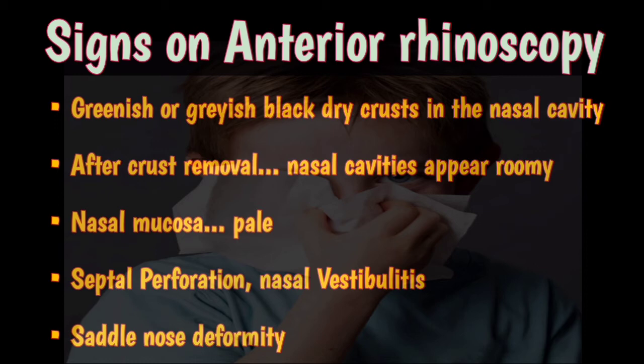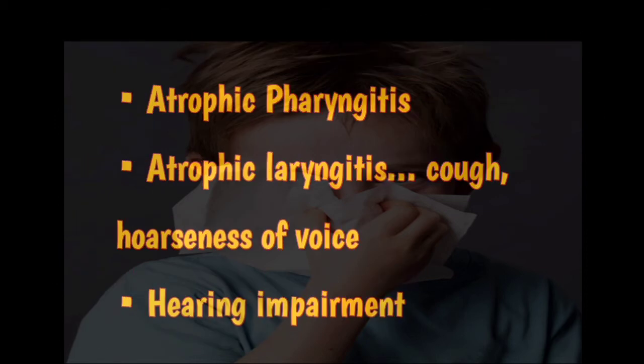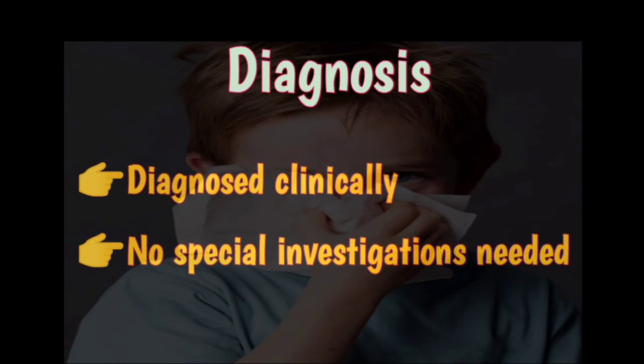After the crusts are removed, nasal cavities appear roomier and the crusts cause bleeding. Nasal mucosa appears pale, and septal perforation and nasal vestibulitis may be seen. The nose may show a saddle nose deformity due to atrophy of the underlying structures. Atrophic changes may be seen in the pharyngeal mucosa, which may appear dry and glazed with crusts. Similar changes may be seen in the larynx with cough and hoarseness of voice, and hearing impairment may occur due to obstruction of the Eustachian tube and middle ear effusion.